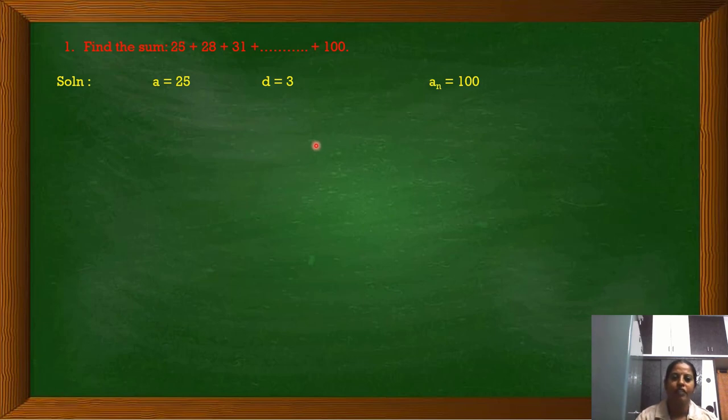The formula we are going to use here is S_n equals n by 2 into 2a plus n minus 1 into d. I think you all recalled that formula.